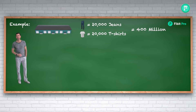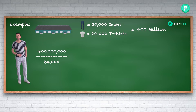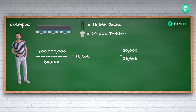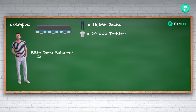A t-shirt maker comes with 4,000 t-shirts and gives them to the godown, then waits while the godown figures out how many jeans to give in return. The godown now has 24,000 t-shirts. We take 400 million divided by 24,000, which equals 16,666 — this is the number of jeans that should remain in the godown. Since there were originally 20,000 jeans, we find the difference: 20,000 minus 16,666 equals 3,334 jeans, which the godown will give to the t-shirt maker.